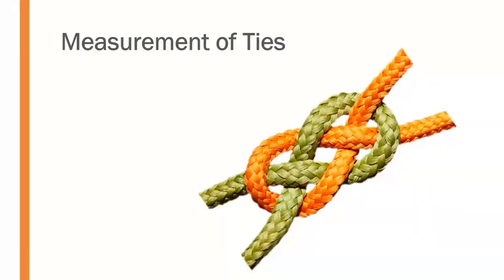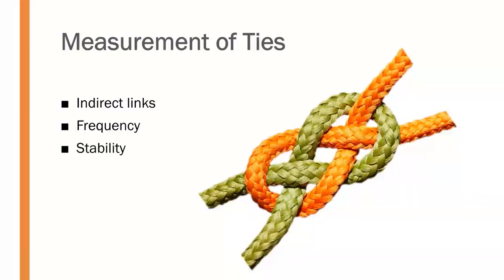We'll begin with the measurement of ties — measuring the things that connect the individual actors within that network. We start with indirect links: measuring the transitory connections between people separated by links in the chain. We also measure frequency — how often actors communicate — stability, meaning how long that connection has existed, and multiplexity, which is how many different links, both inside and outside the organization, an individual has. We examine the strength of connections, including the amount of time, emotional intensity, intimacy, or reciprocal services present.